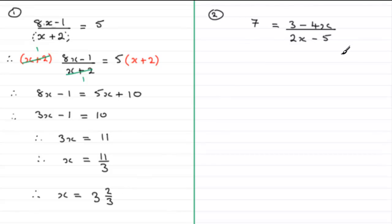You might like to have a go at this question: 7 equals (3 minus 4x) all divided by (2x minus 5). Pause the video, have a go, then come back when you're ready and you can check your solution.